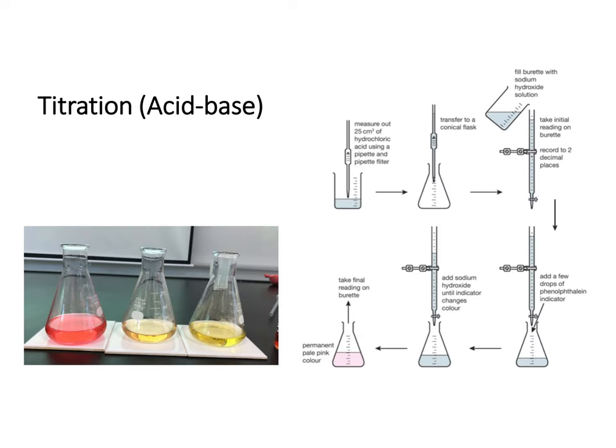One type of experiment you can get is an acid-base titration, the most common type. It requires the use of an indicator, and the most common indicator used in the lab is methyl orange. Methyl orange is yellow in alkaline conditions (pH more than 7) and red when acidic. At the end point, one drop turns the solution orange — from red to orange if acid is in the conical flask, or from yellow to orange if alkali is in the conical flask.